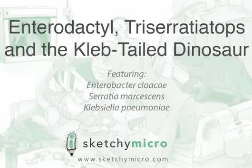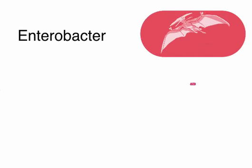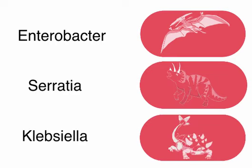We're going to knock out three members of the Enterobacteriaceae family all in one video. This is a little more ambitious than normal, but I think we've grouped them nicely so it shouldn't be too bad. The three we're going to cover are Enterobacter, Serratia, and Klebsiella, or as we at Sketchy Micro know them: Enterodactyl, Triceracea-tops, and finally the Ankylosaurus with a club tail, or Klebtail — Klebsiella.